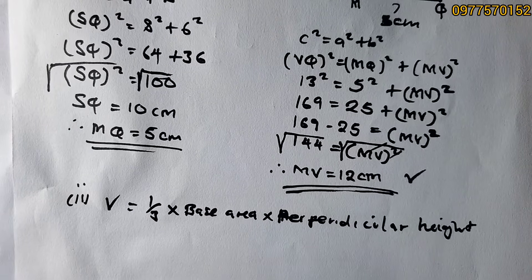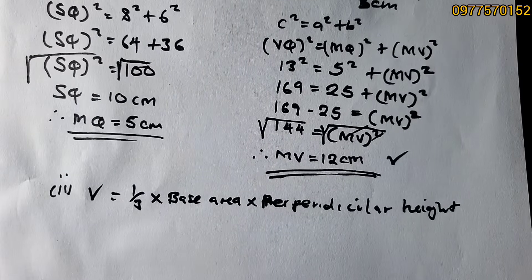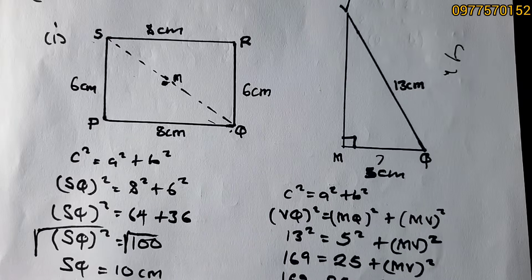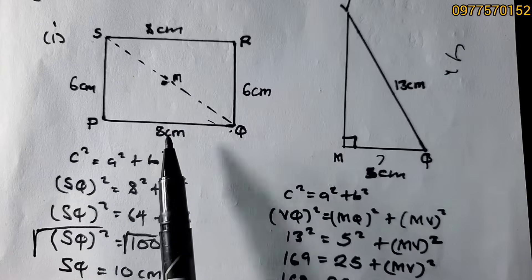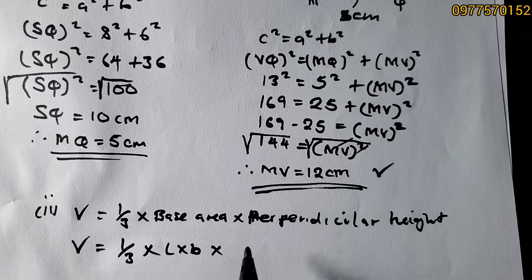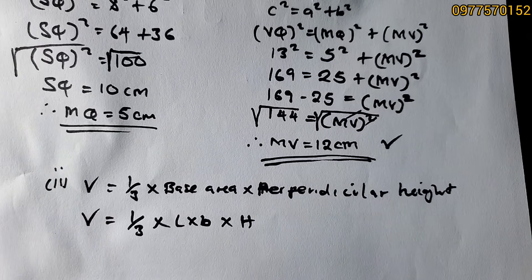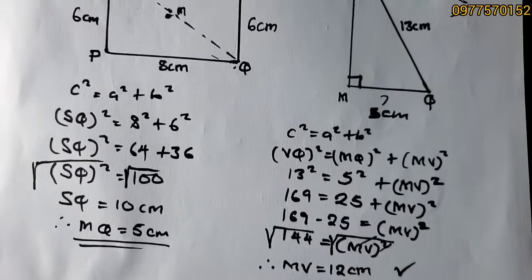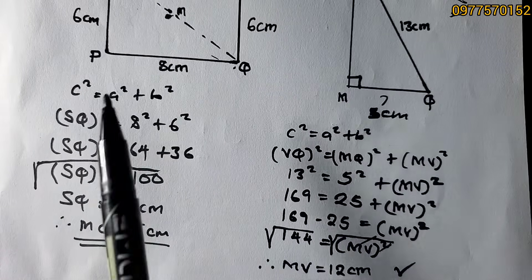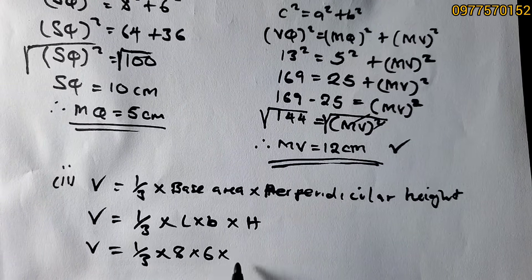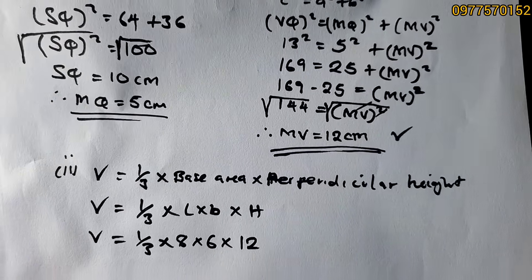If you found the perpendicular height wrong, the volume will also be wrong. Since the base is a rectangle, base area = length × breadth. So volume = ⅓ × l × b × h. Substituting: length = 8 cm, breadth = 6 cm, perpendicular height = 12 cm. Volume = ⅓ × 8 × 6 × 12.